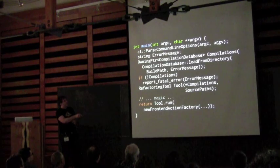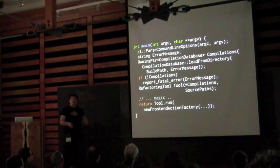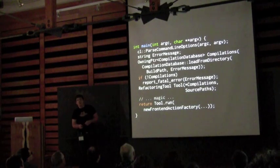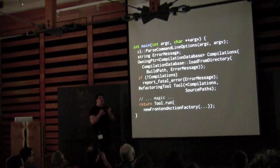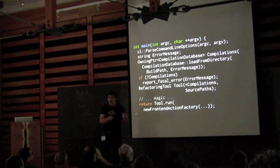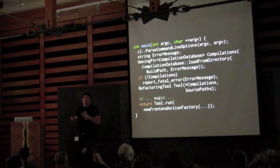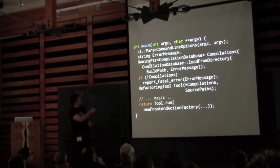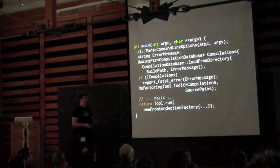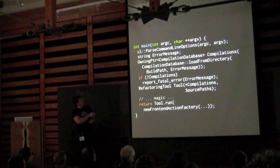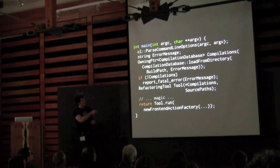The very first thing we do is parse out command line options — nothing too fancy, but it lets us configure and set up our entire system. Then we do probably the most fundamental part: we build up a compilation database. We load it from a directory — the directory where you built your project, your actual build tree. We look in that directory for artifacts left over by the build system that tell us how to compile your source code.